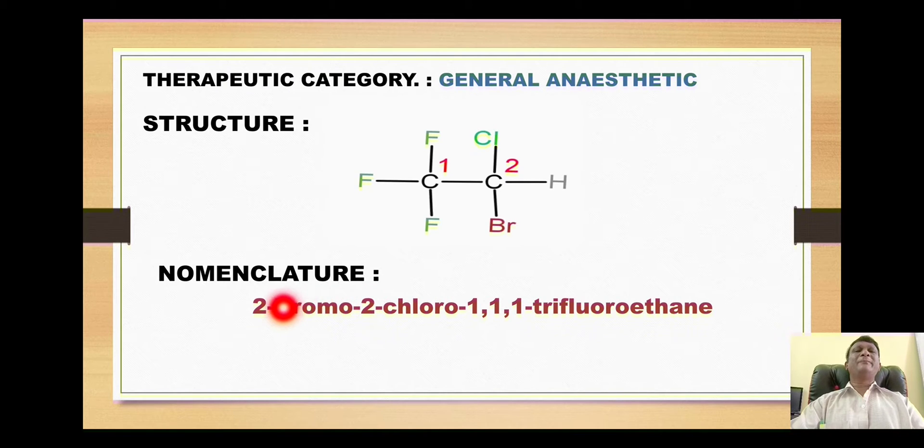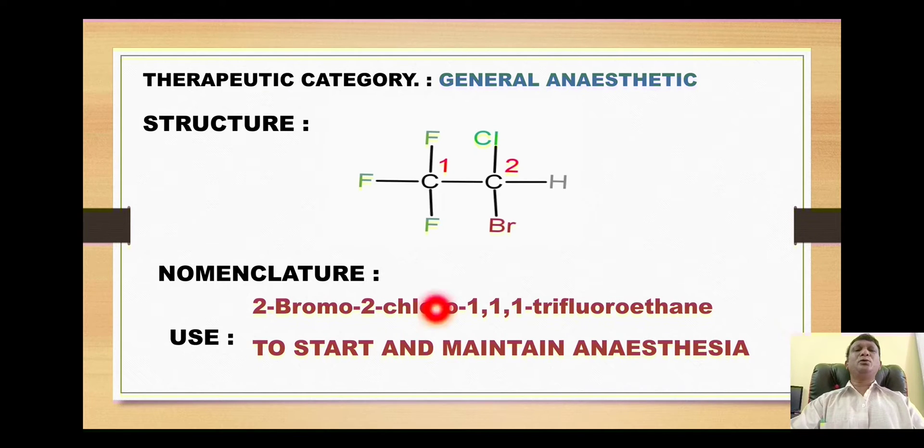According to IUPAC nomenclature, the name is 2-bromo-2-chloro-1,1,1-trifluoroethane. This compound is exclusively used to start and maintain anesthesia during major operational procedures. It is a very important compound and is administered as an inhalational drug.